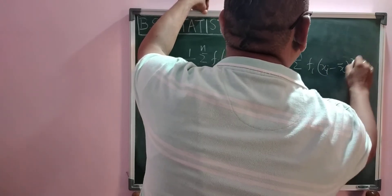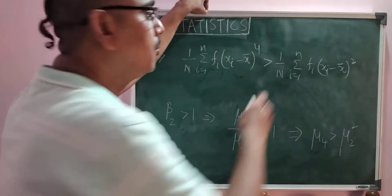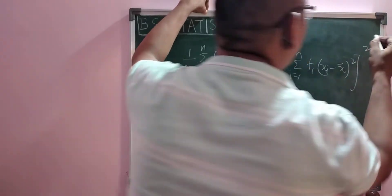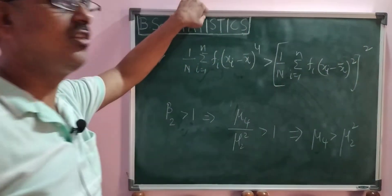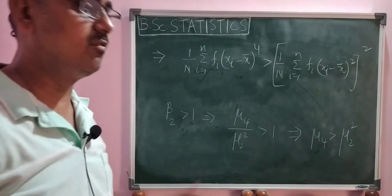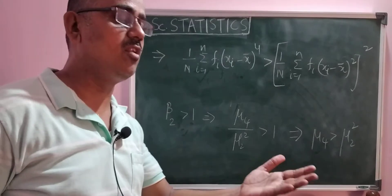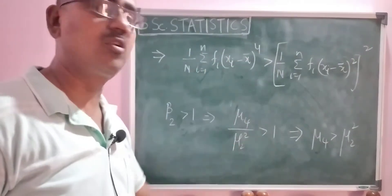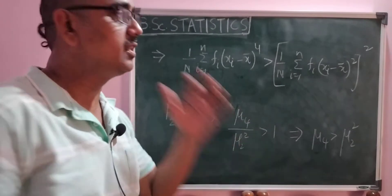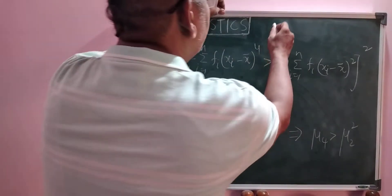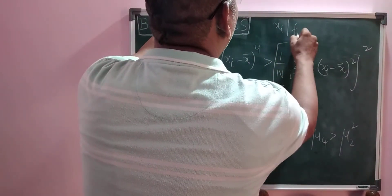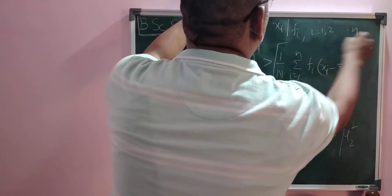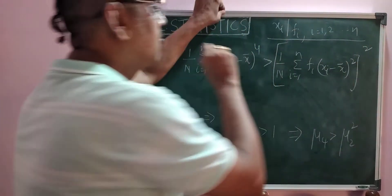This is the formula of mu 2 square — mu 2 whole square. For different discrete values x_1, x_2, and so on up to x_n, this is the formula for a grouped frequency distribution with x_i and f_i, i equals 1 to n. We have this particular formula.